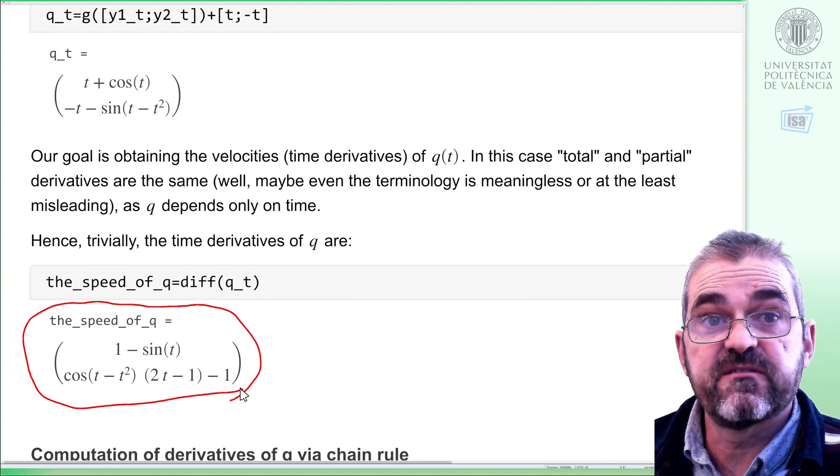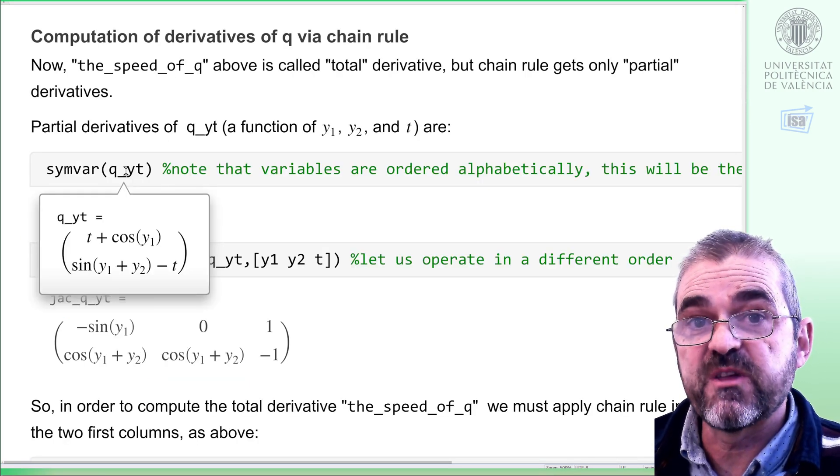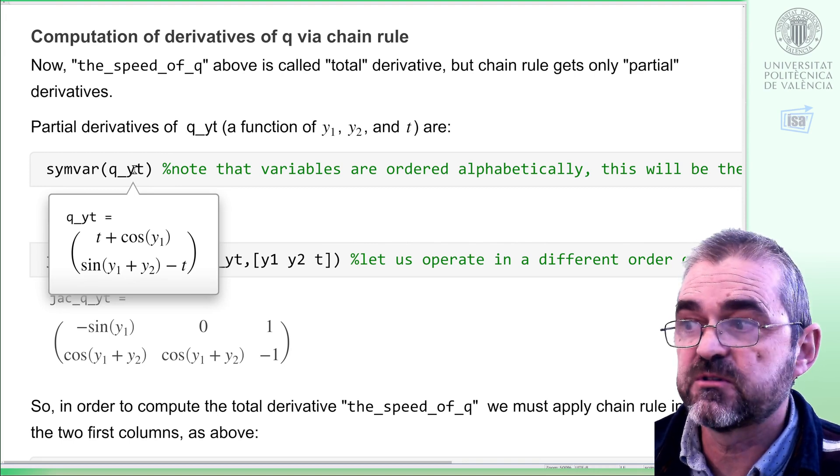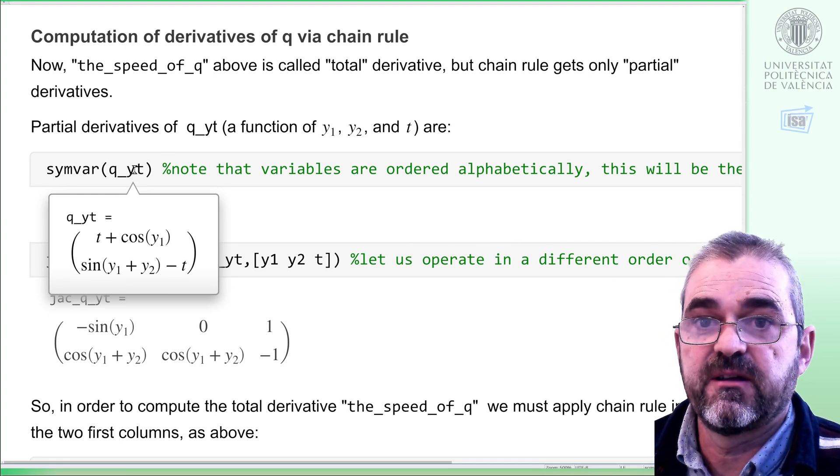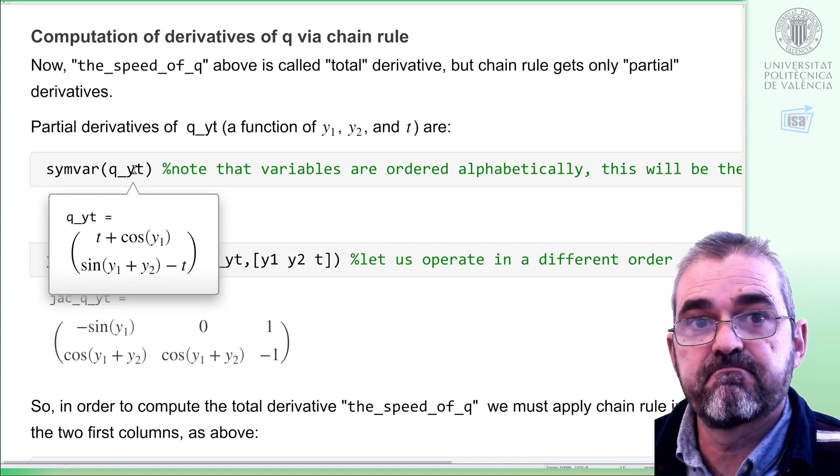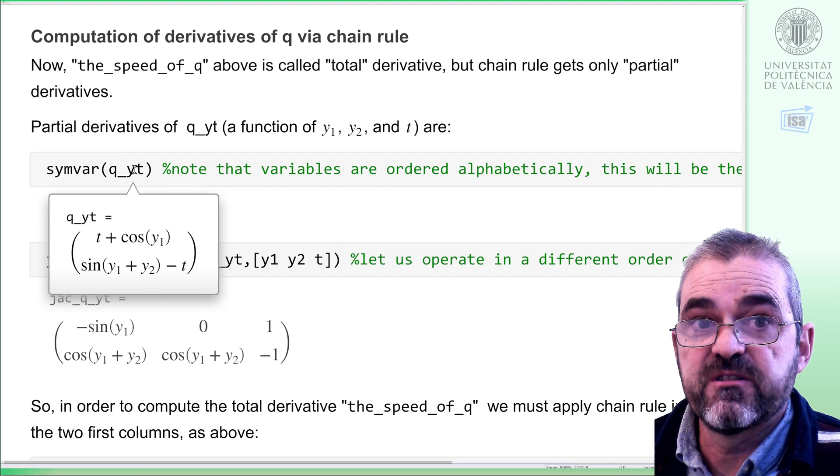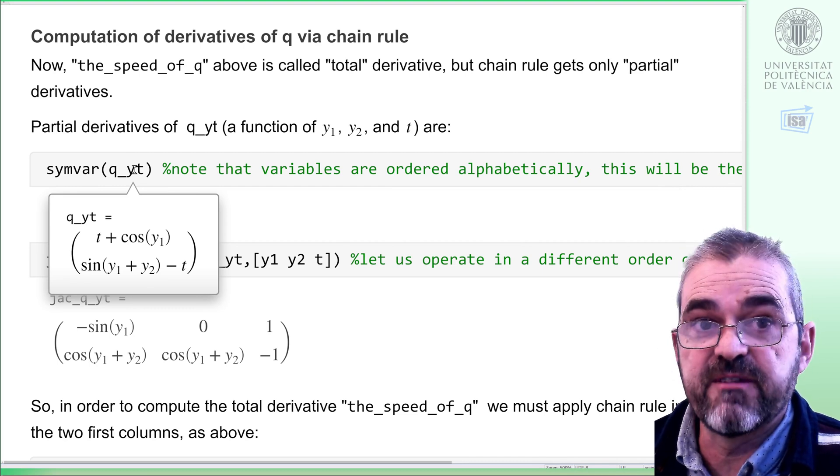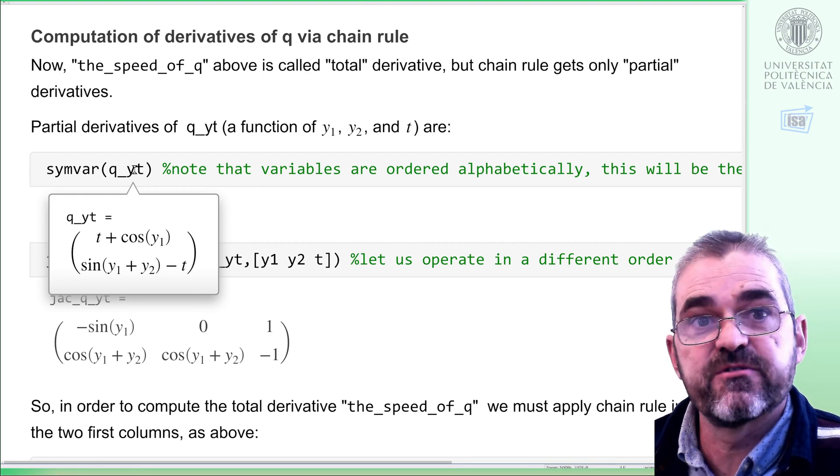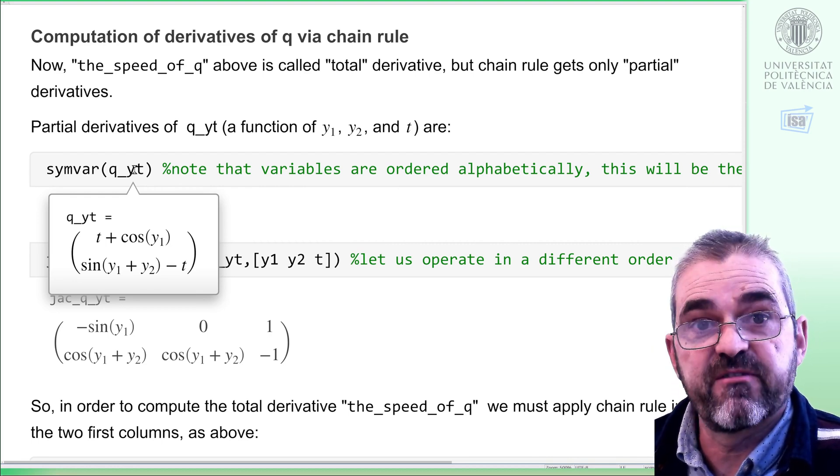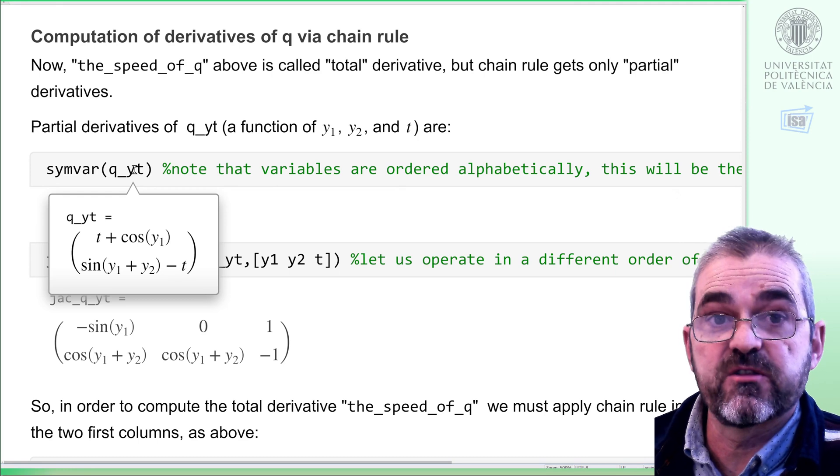And our objective is using chain rule to obtain exactly the same expression. That thing we called the speed of q will be named as the so-called total derivative of this qyt that depends on three letters. It's just a normal derivative when everything is plugged in and it depends on only one letter, but in order to name differently the partial derivatives of the function of three variables qyt and the time derivative after substitution, we call the partial derivatives when we have three letters in and the resulting expression depending on only one letter, we will call it the total derivative.